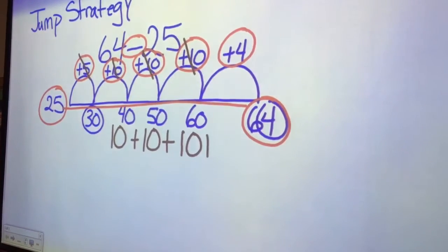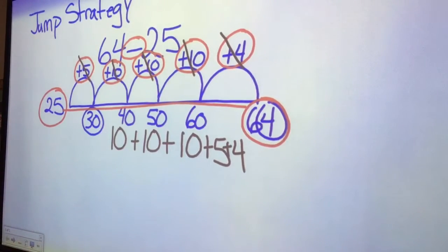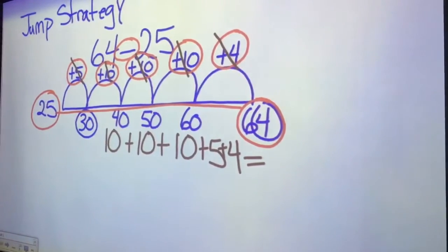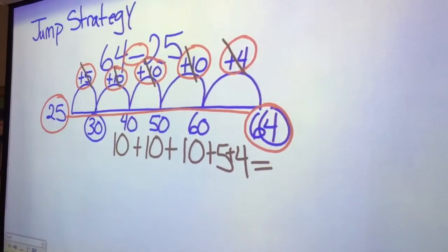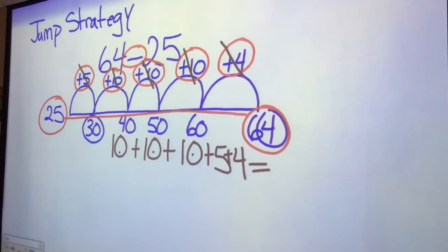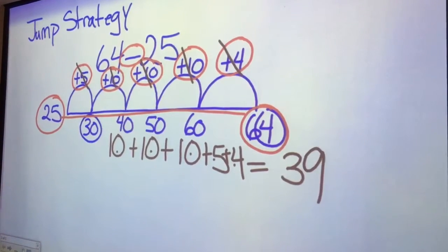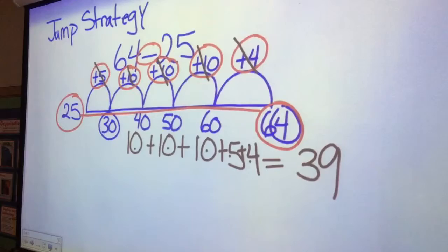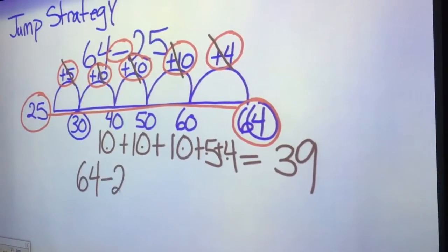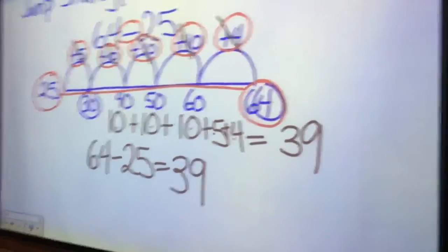Plus five, plus four. Kids are going to be ready to put these tens back together: ten, twenty, plus ten more is thirty, plus five is thirty-five, plus four is thirty-nine. I then ask students to rewrite the problem using the number model: sixty-four minus twenty-five equals thirty-nine.